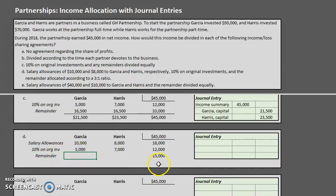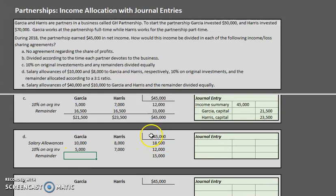Most problems divide the remainder equally, but Scenario D uses a 3-to-1 ratio. Treating this like a fraction: there are 4 total parts, so Garcia gets 3/4 of the $15,000 remainder and Harris gets 1/4 of the $15,000 remainder. Be careful — apply this ratio only to the remainder, not the full $45,000.